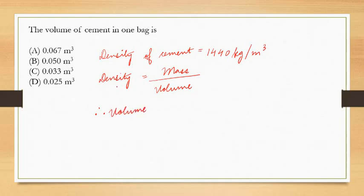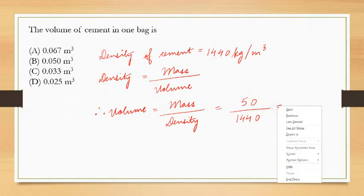Therefore, volume equals mass of cement divided by density of cement. One bag of cement has 50 kg, so volume equals 50 divided by 1440 kg/m³, which equals 0.034 m³. The answer is option C, 0.033 m³.